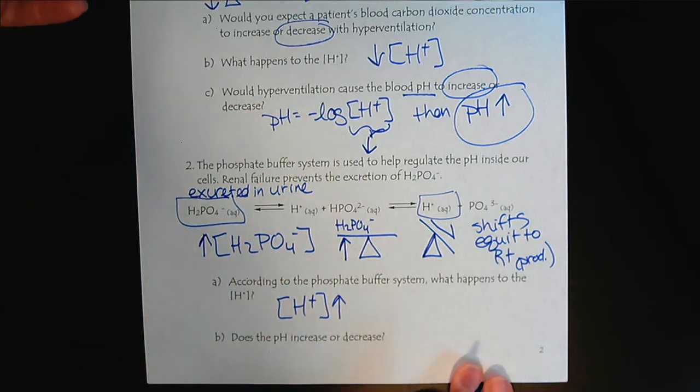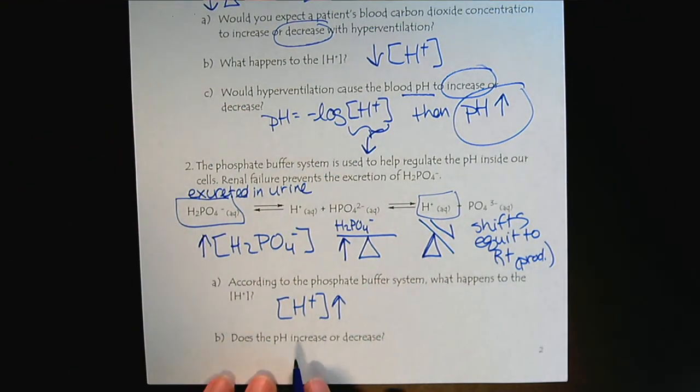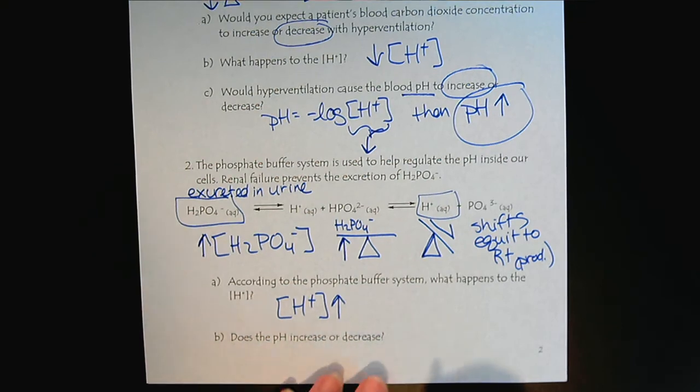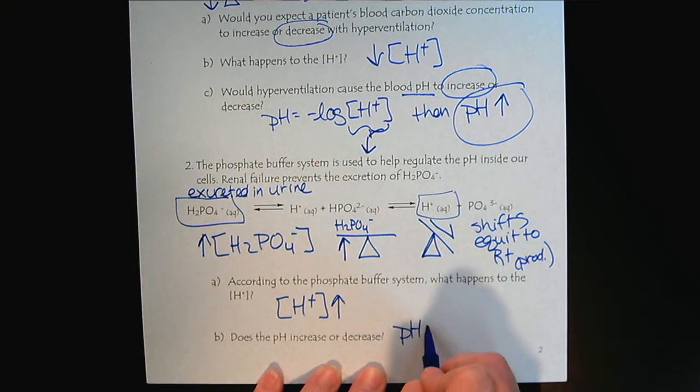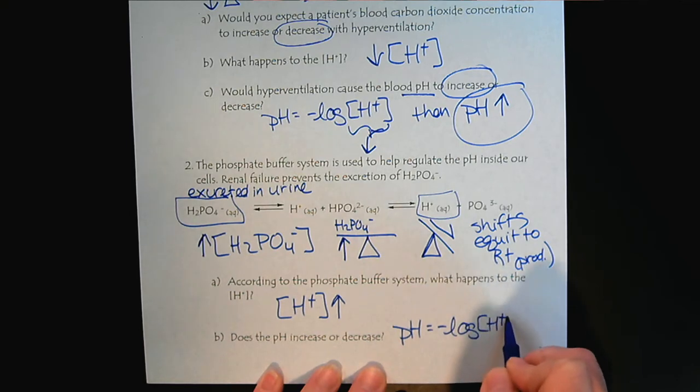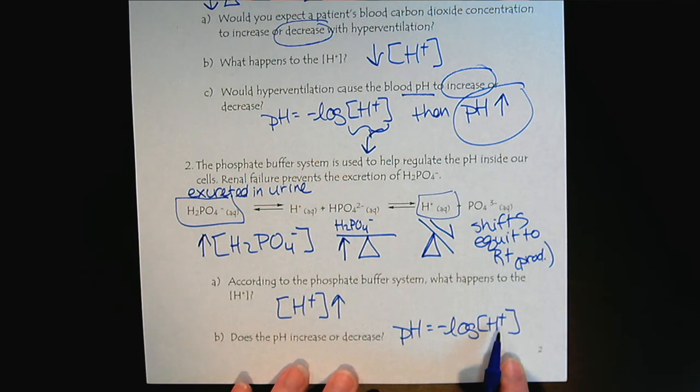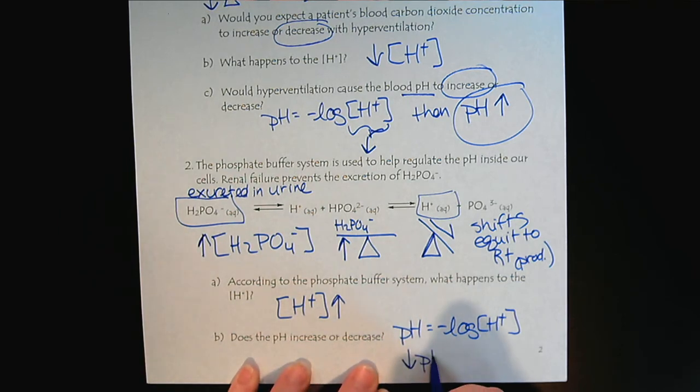And so now the last point to bring in is what does that do to the pH? The pH is the negative log of the hydrogen ion concentration. So if we're increasing the hydrogen ion concentration, we are lowering the pH because there's more H+.